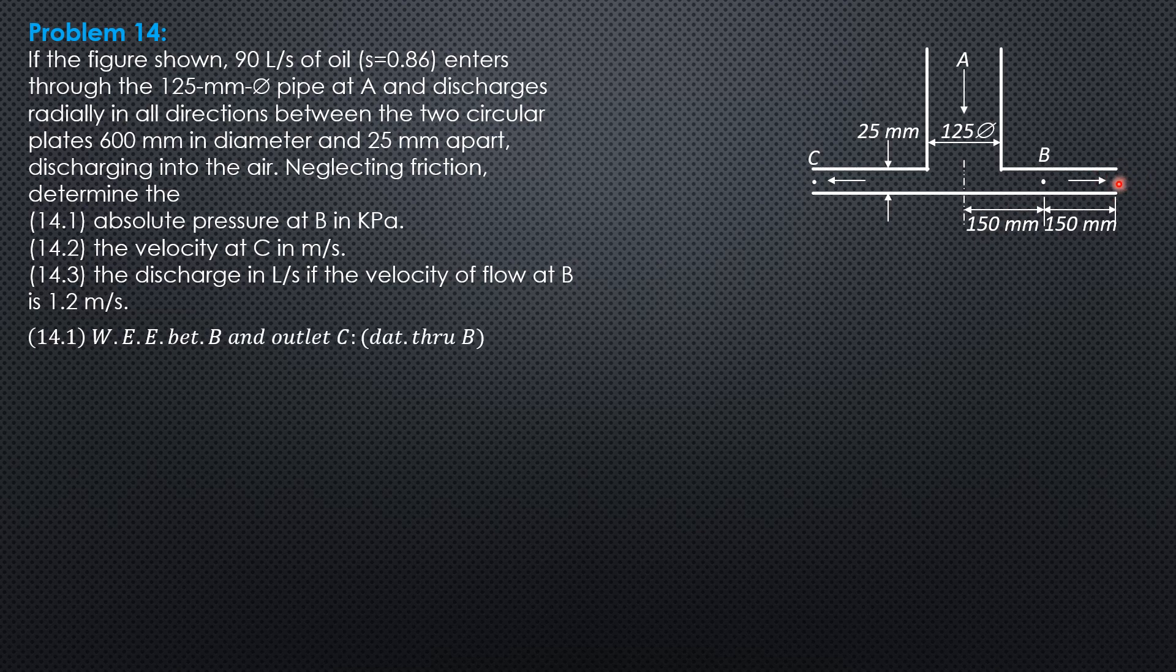So this is exposed to the atmosphere, the pressure head here is zero. We have velocity head at B, pressure head at B, elevation head at B, which is zero because the datum is through B, equals velocity head at C, pressure head at C, elevation head at C, head loss from B to C. Head loss is not mentioned here, so we treat it as zero.